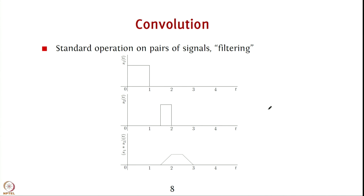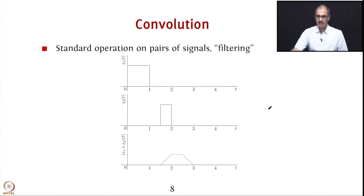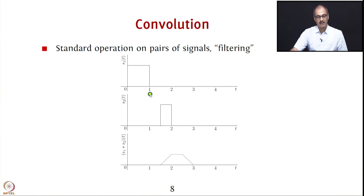A common operation between pairs of signals is convolution, which corresponds to the act of filtering. Convolution is defined by the flip-and-overlap-and-add-shift method: you take S1(t), flip it to get S1(-t), shift it by tau to get S1(tau-t), and perform the overlap integral at various shifts. This is covered in signals and systems, so we will not spend too much time on it here.